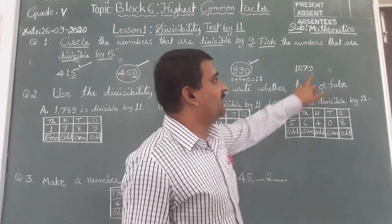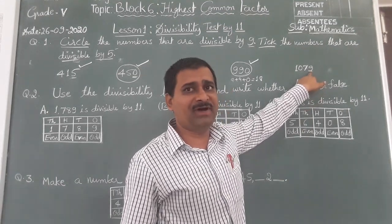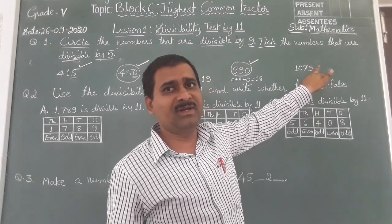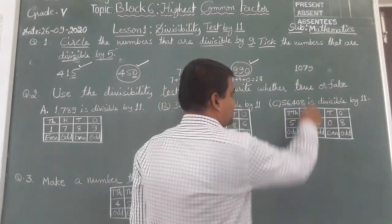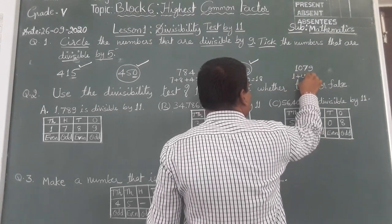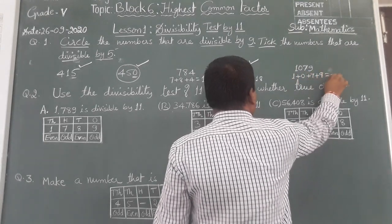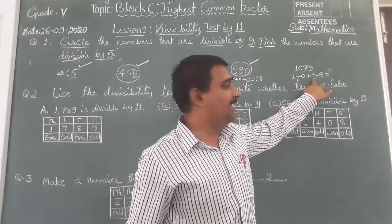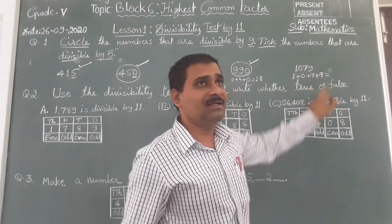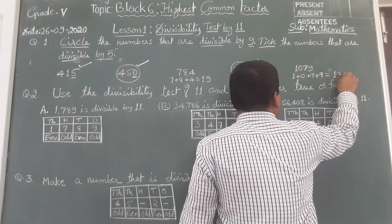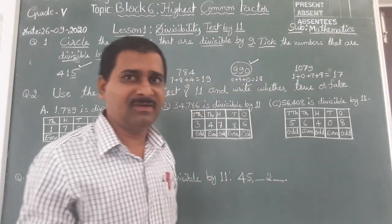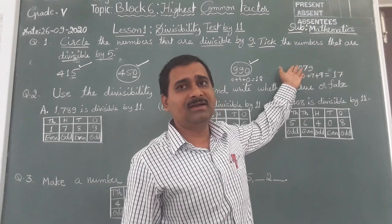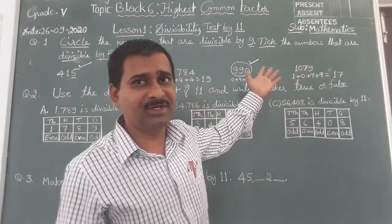The last number: it is definitely not divisible by 5 because there is no 0 or 5 in the 1's place. We only need to check divisibility by 9 by adding the digits: 1 plus 0 plus 7 plus 9. 1 plus 0 is 1, 1 plus 7 is 8, 8 plus 9 is 17. 17 is not divisible by 9. So this number is not divisible by 5 or 9 — no need to circle or tick mark.